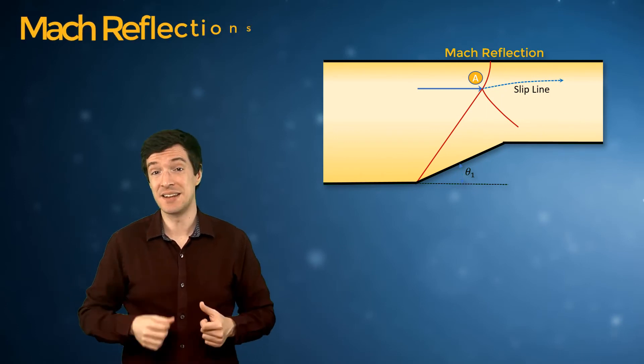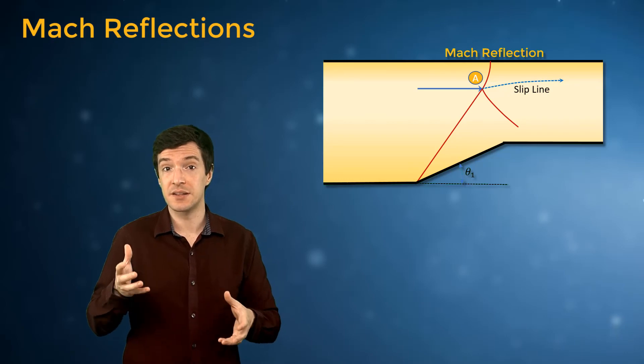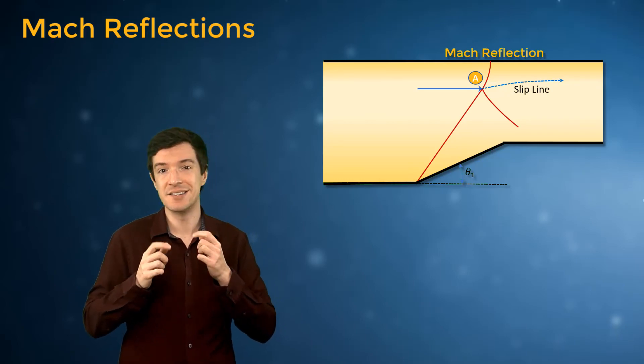A streamline passing through point A forms a slip line downstream from point A. A slip line is a streamline across which the pressure is continuous, while all the other thermodynamic properties are discontinuous.